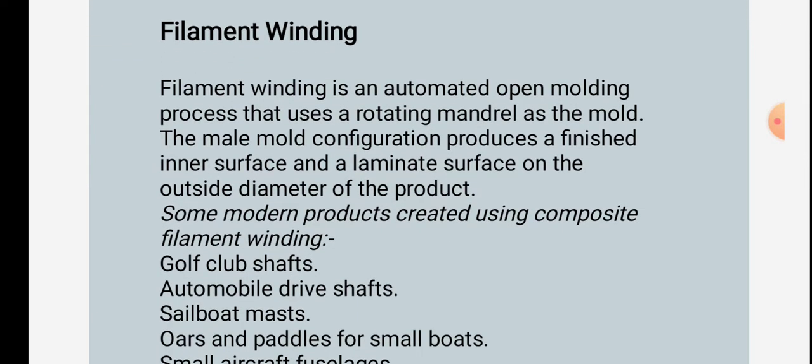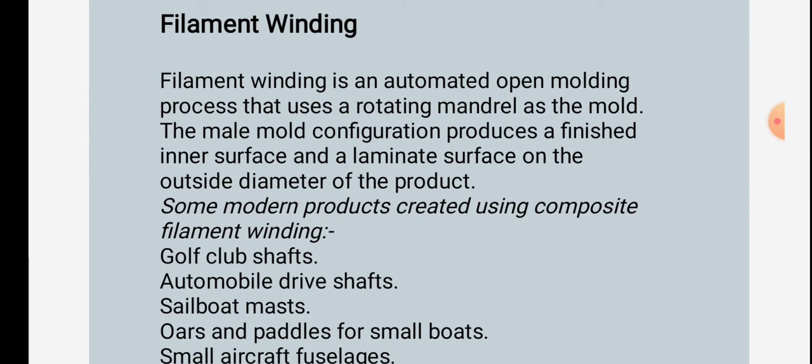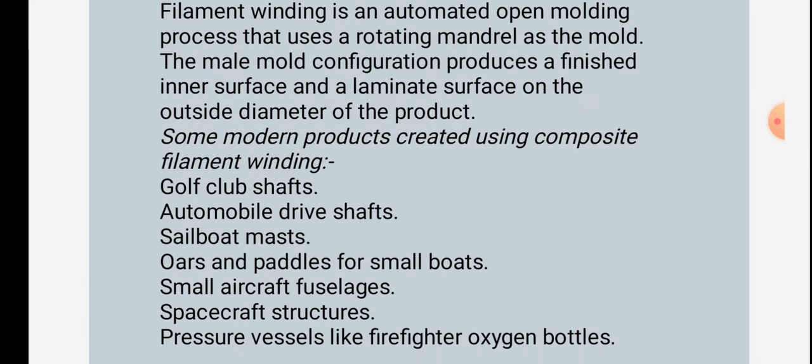Filament winding is an automated open molding process that uses a rotating mandrel as the mold. The male mold configuration produces a finished inner surface, with the laminate on the outer diameter of the product. Some modern products are created using composite filament winding.